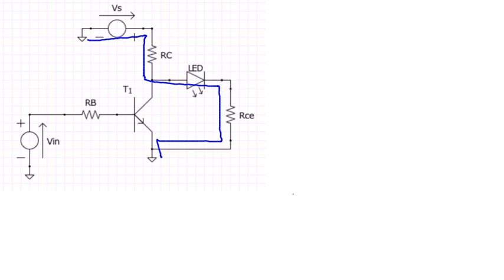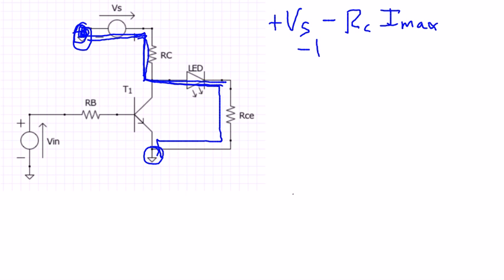So if we want to minimize that to 10 milliamps, we need to figure out what RC should be. If we use Kirchhoff's voltage loop, starting at ground and going to ground, we're really making a loop here. Starting here at zero, we first go along, we have a plus VS, then we come across to RC, that's a drop in voltage, so it's minus RC times Imax, where Imax is that 10 milliamps. Then we come across here, across the LED.